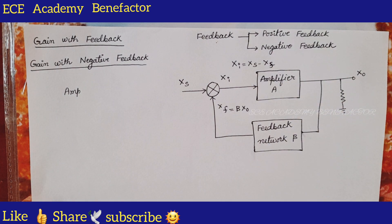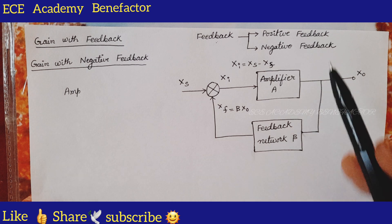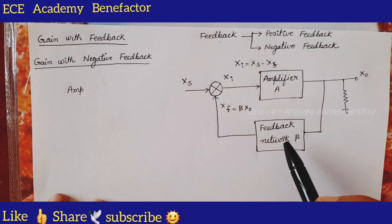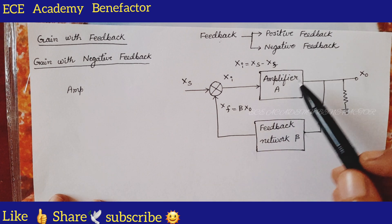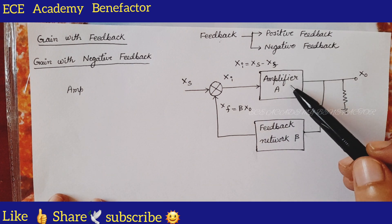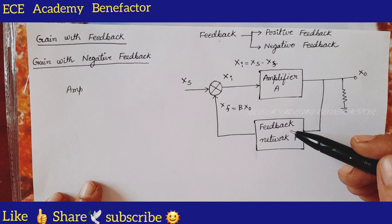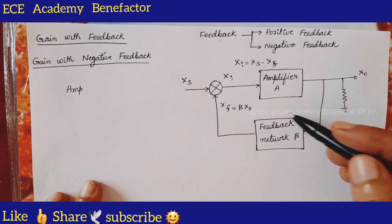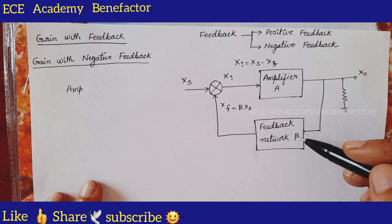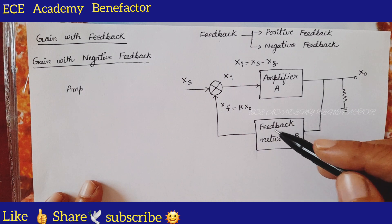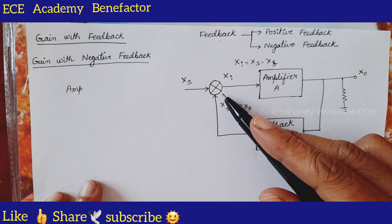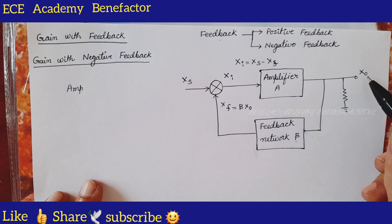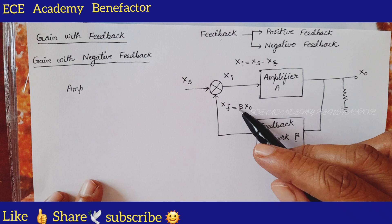Let us see the gain derivation of negative feedback. This is a block diagram of the negative feedback — an amplifier of gain A and a feedback network of ratio beta. The feedback network is taking a part of output and injecting it back to the input.